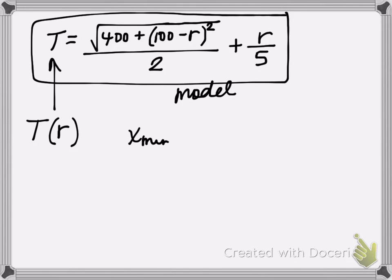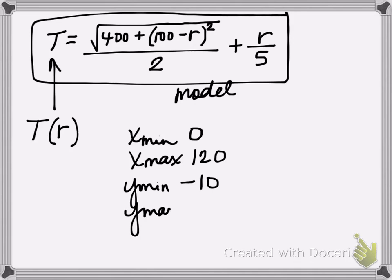If you are struggling at all, let me share my window with you. I had an X minimum of 0 and an X maximum of 120, a Y minimum of negative 10, and a Y maximum of 60. Your window doesn't have to match mine perfectly. This is just one window that does work. It lets you see on the graph that it's a decreasing function, but then eventually it does bottom out and start to swing up. So we do have this minimum that we can calculate.